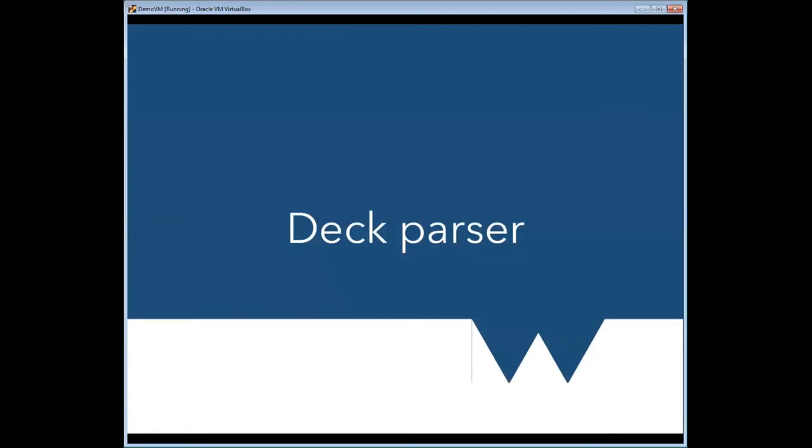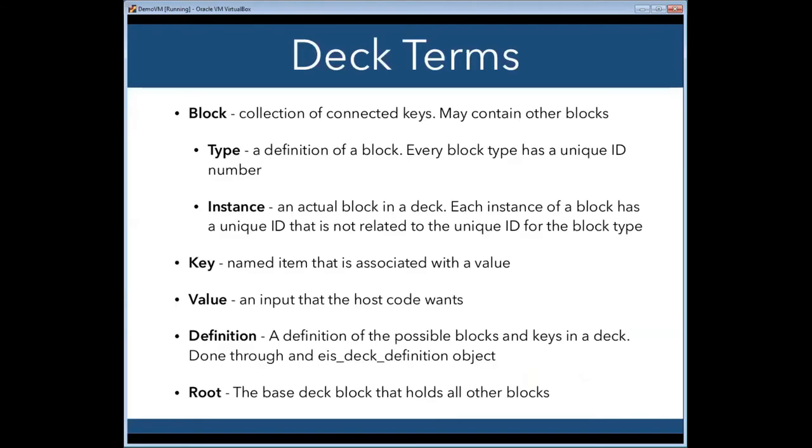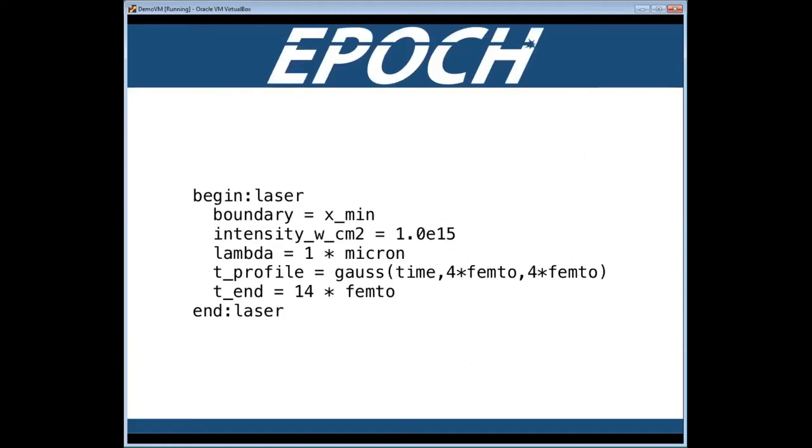So that's it for the maths parser bit. The deck parser is the other part. That's the bit that actually deals with that structured text file. So again, just quickly going through this, you have a block, which is a collection of connected keys, a type, which is a definition of a block. Not really going to go into it, but if someone wants to look back through these slides afterwards, this is kind of helpful. You have an instance, which is an actual block in a deck as opposed to the definition of a block. You have a key, you have a value, which is a named item which is associated with a value. You have a value, which is an input that the host code wants somehow. And you have a definition, and root is a term that I'll use in a couple of places, which is the base block that holds all other blocks.